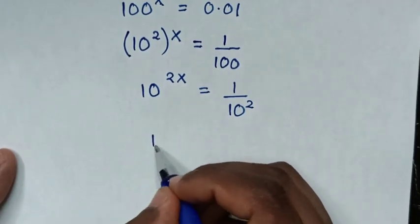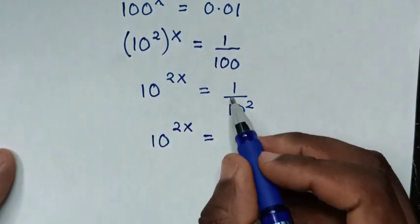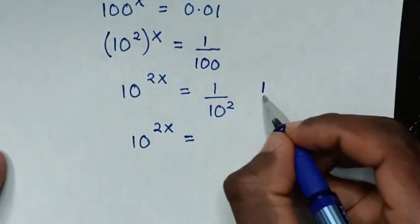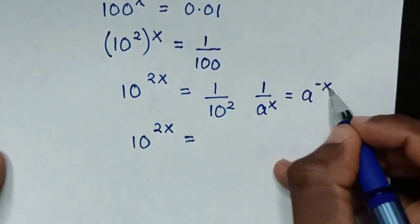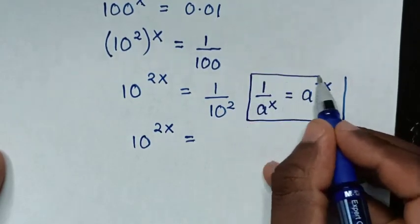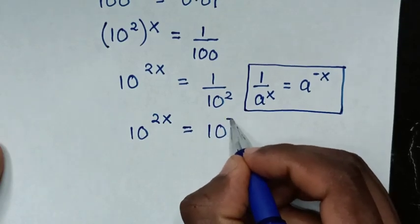Then it will be this 10 power of 2x is equal to, from here 1 over 10 square will apply exponential rule that 1 over a power of x is equal to a power of negative x. So in here it will be 10 power of negative 2.